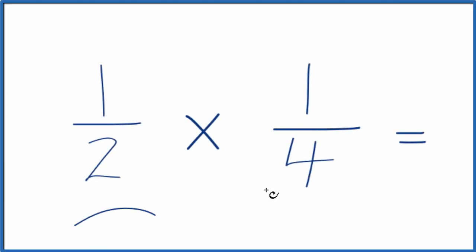Let's multiply one half by one fourth. And when we're multiplying fractions, it's fairly easy. As long as they're both fractions, we can multiply the numerators here, and then once we've done that, we multiply the denominators.